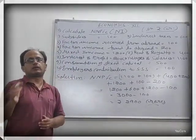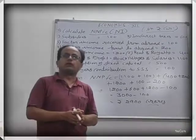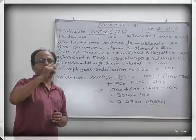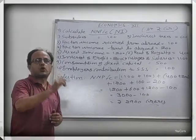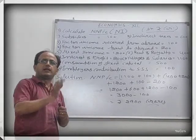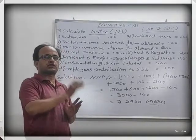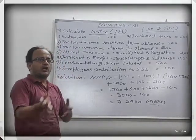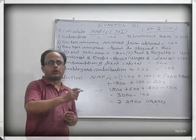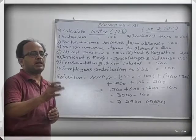What is the formula for the measurement of national income by the income method and what are its three portions? The formula is: Compensation of Employees plus Operating Surplus plus Mixed Income. Why do we find NDPFC? If we add NFIA, we get national income. So NDPFC equals Compensation of Employees plus Operating Surplus plus Mixed Income, plus NFIA.